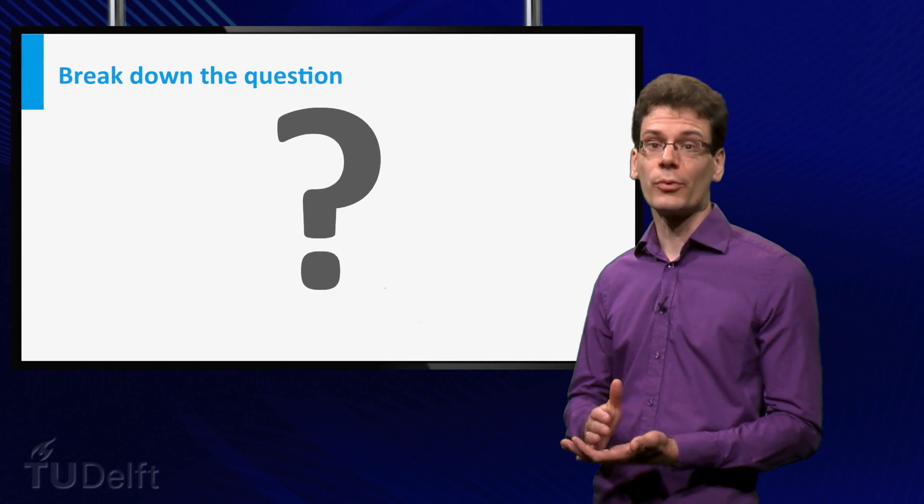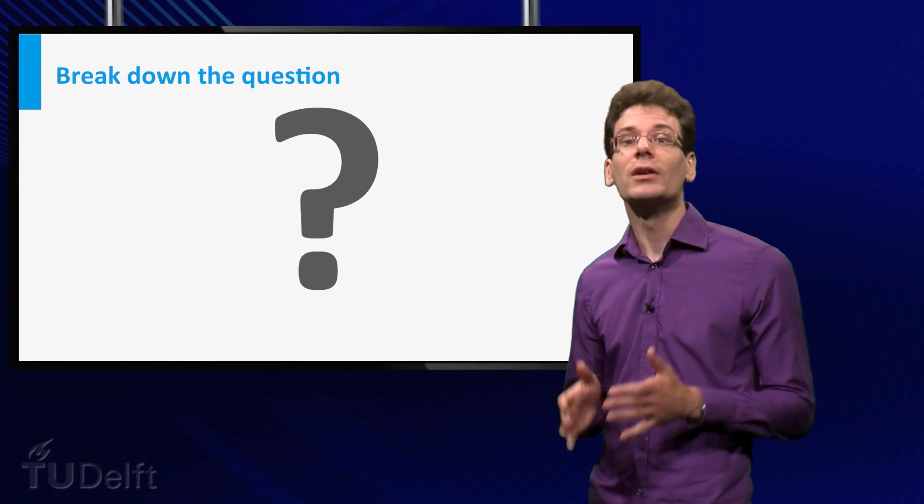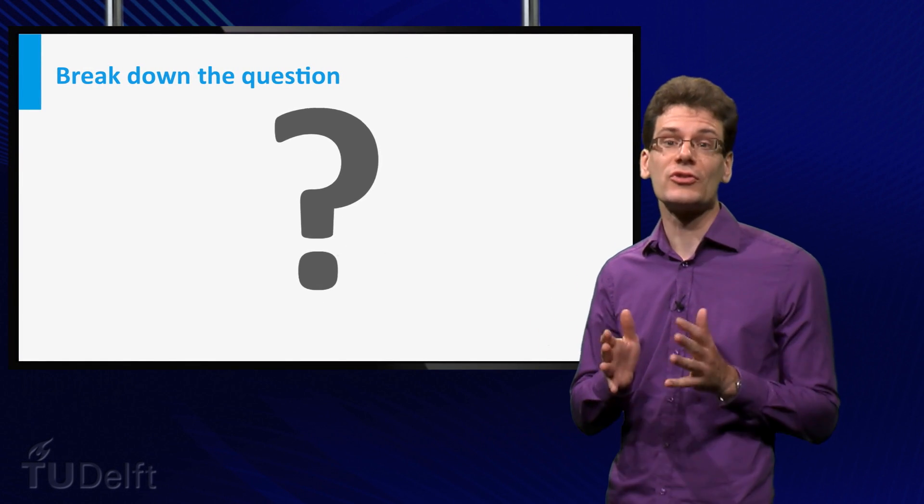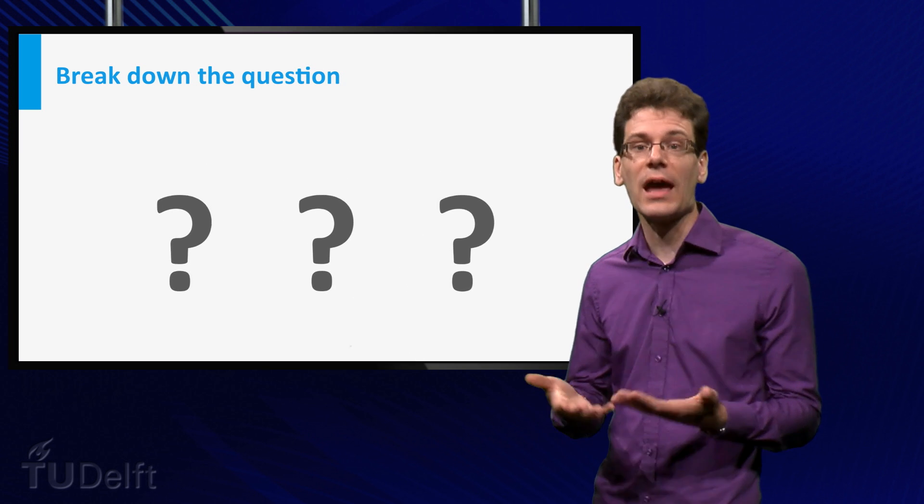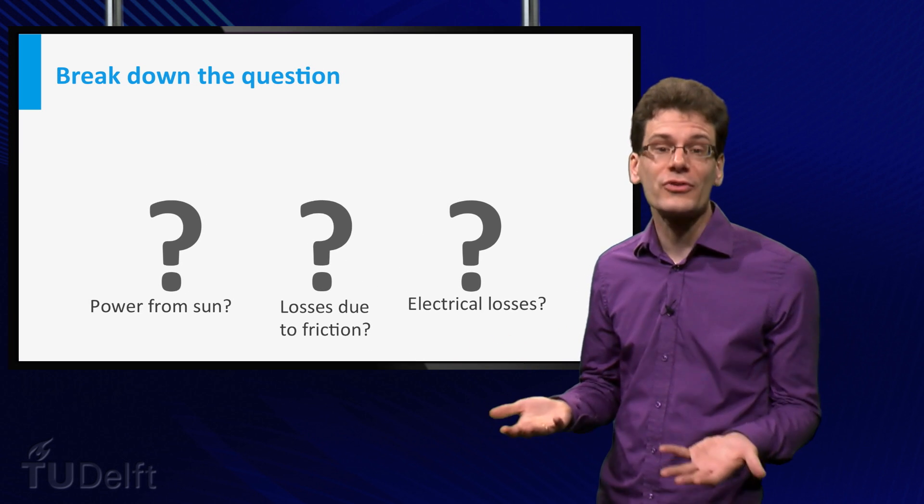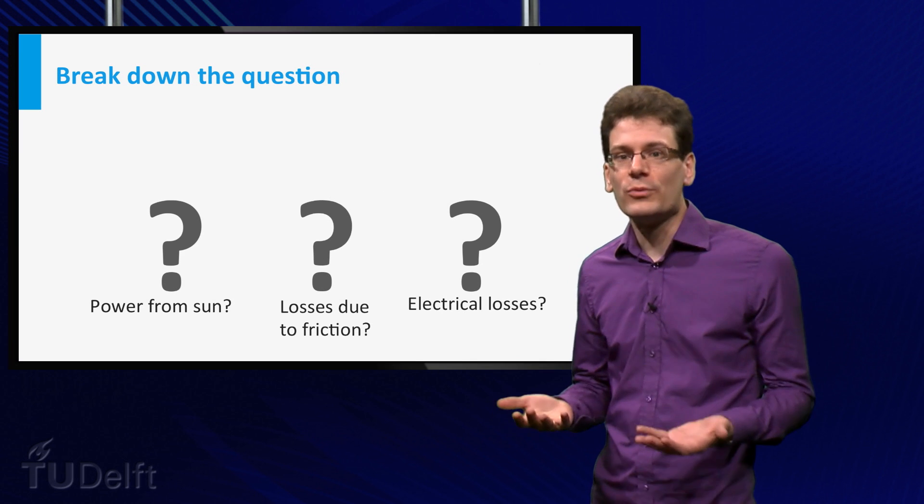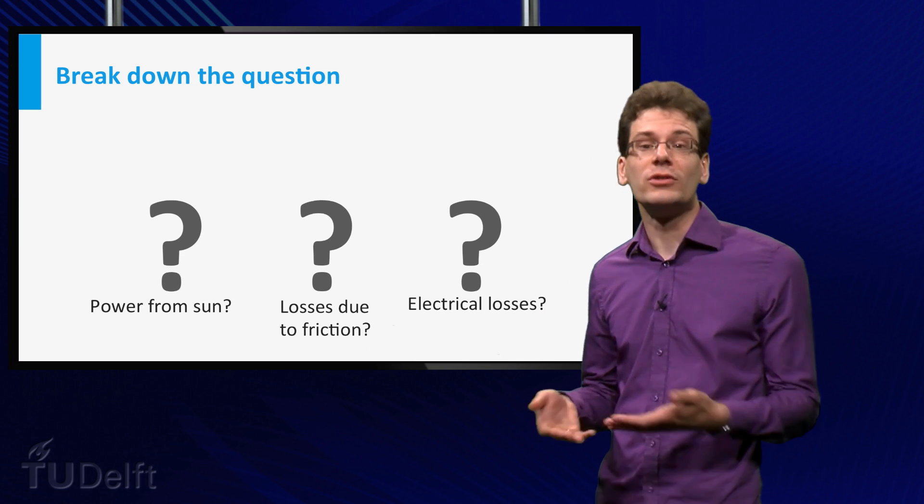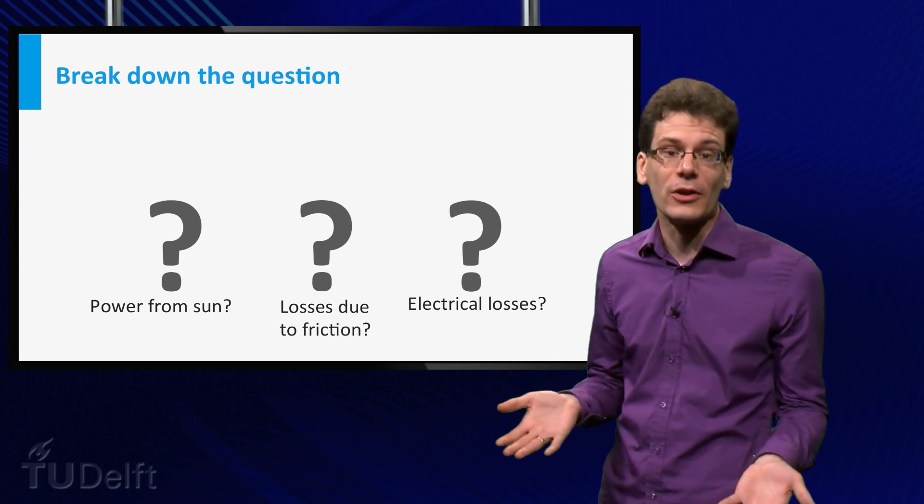The first step with such a problem or challenge is analysis. You try to break down the question in smaller and more specific questions like, how much power can you harvest from the sun? What is the influence of power losses like air friction, roll friction and battery loss?